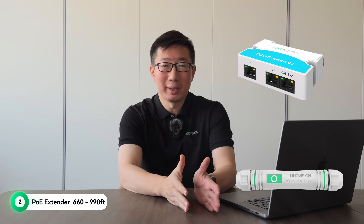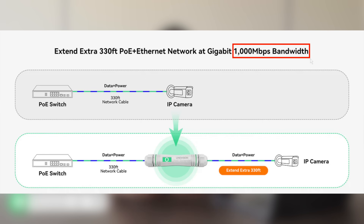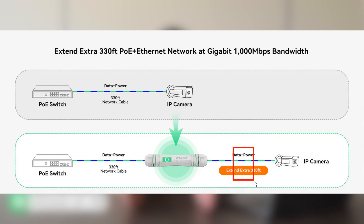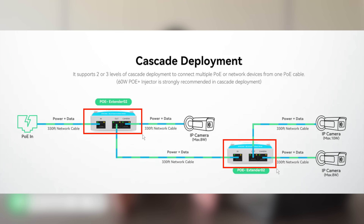A POE Extender, also called a POE Repeater, takes power and data from a source like a POE switch or injector and boosts its signal. Unlike POE Extend mode which cuts bandwidth down to 10 Mbps, active POE Extenders can keep speeds up to 100 or even 1000 Mbps. Each extender typically adds another 100 meters to your transmission range, so you can daisy-chain multiple extenders for even longer distances.